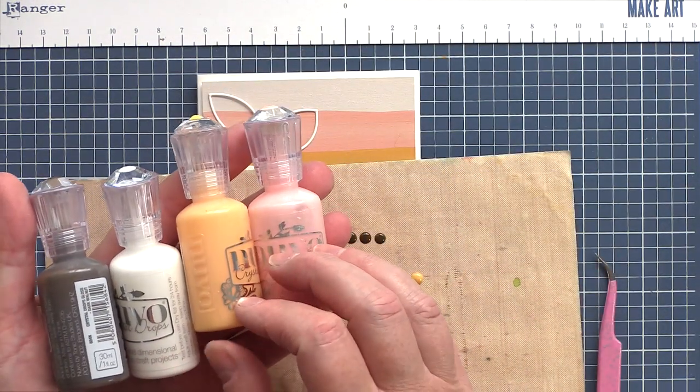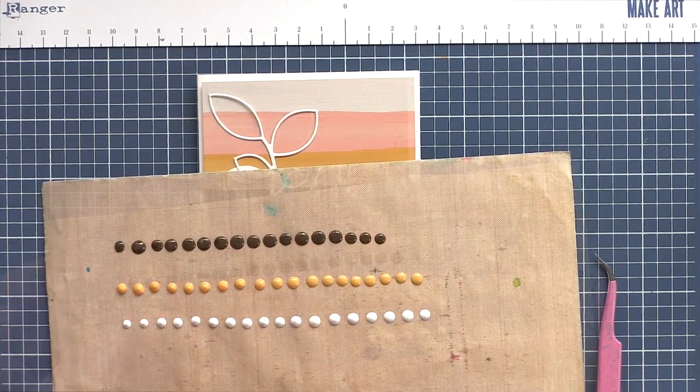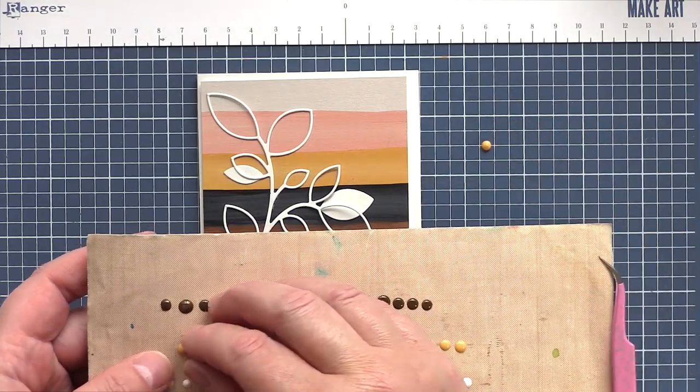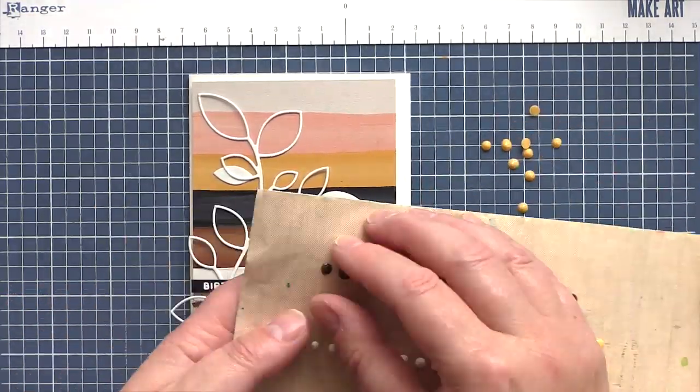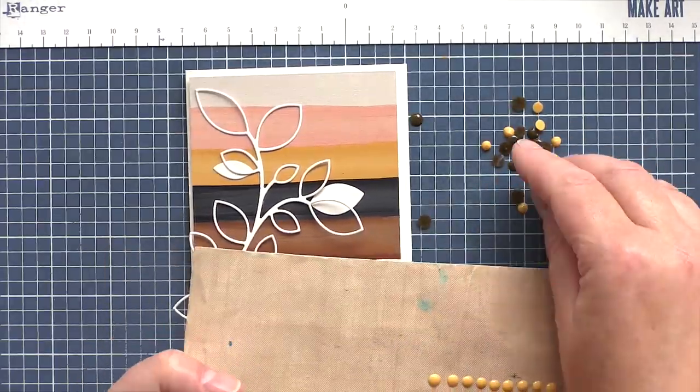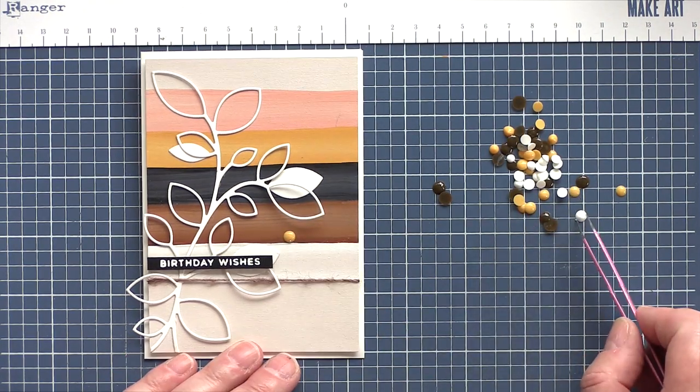To embellish the card, I'm going to use Nuvo droplets, and here's a top tip for you. I often squeeze out favorite colors onto a craft mat and leave to dry overnight. Then you can simply peel the droplets off the mat the next day. This way the droplets are dry, and you can fiddle around with their placement until you are happy before adhering them.